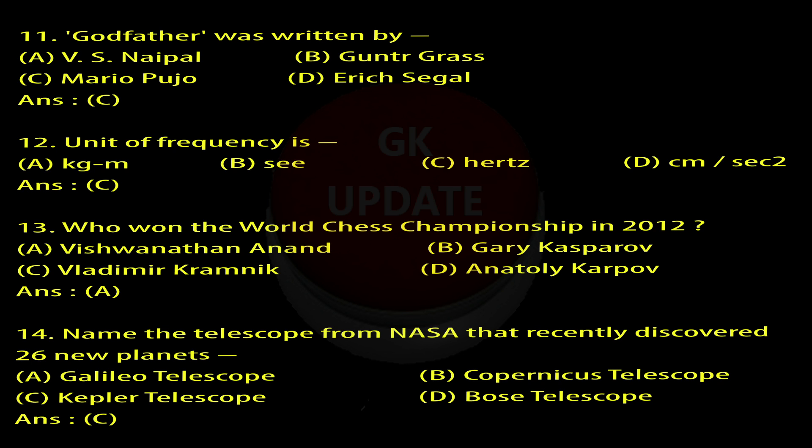Question 14: Name the telescope from NASA that recently discovered 26 new planets. A. Galileo Telescope, B. Copernicus Telescope, C. Kepler Telescope, D. Bose Telescope. Answer: C.